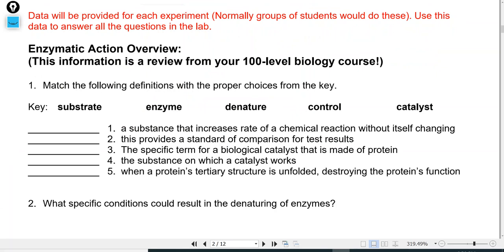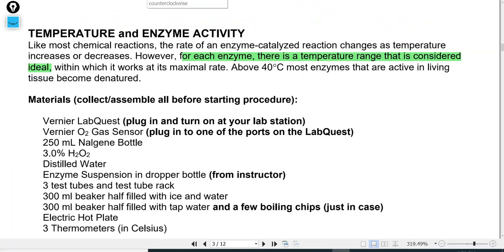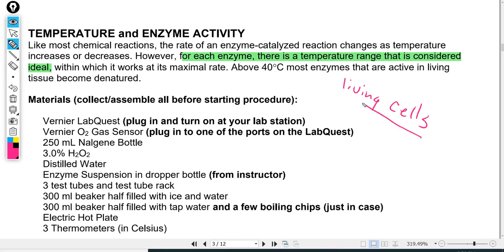So here's just a review of some terms. We're going to look at three different variable conditions and see how they affect this enzyme catalase. Temperature is the first one. So for each enzyme, it usually has a temperature range that works really good for it. Remember that we are looking at living cells. So think about the temperature that is normal for your body, and that's probably going to be optimal.